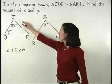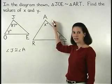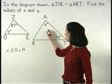And if angle J is congruent to angle A, then 87 equals X.